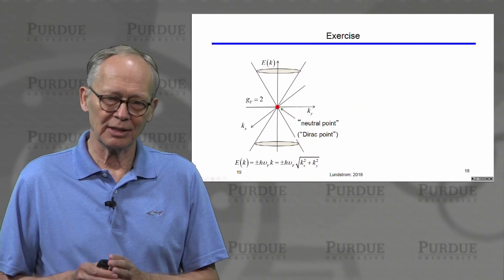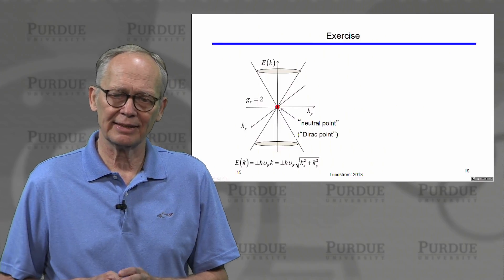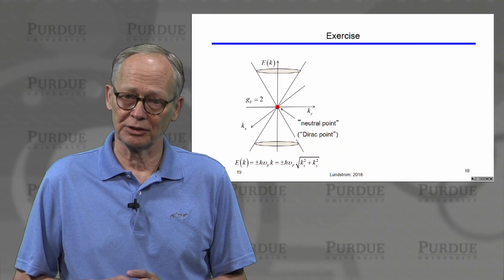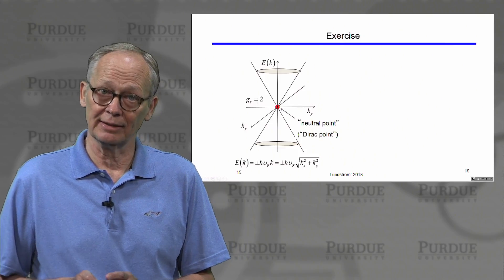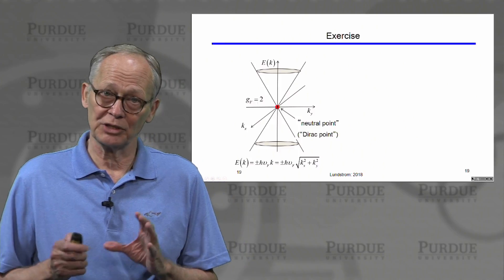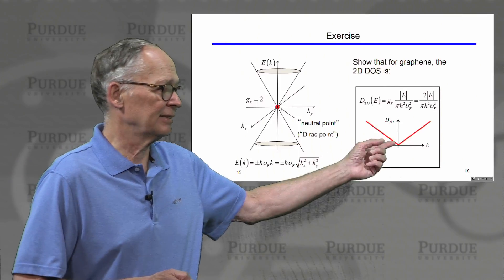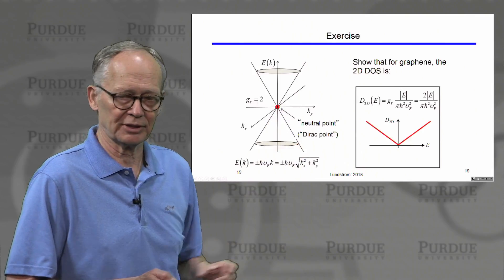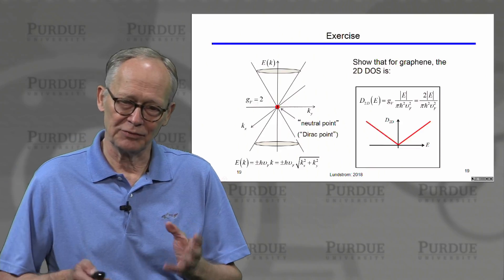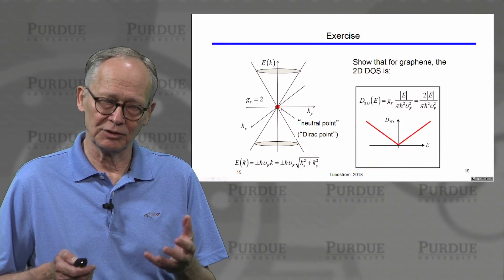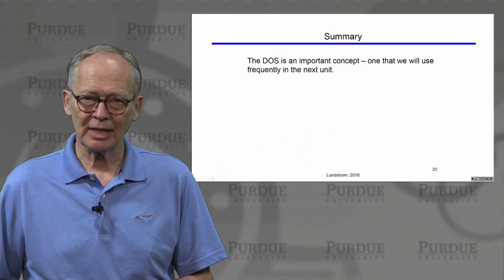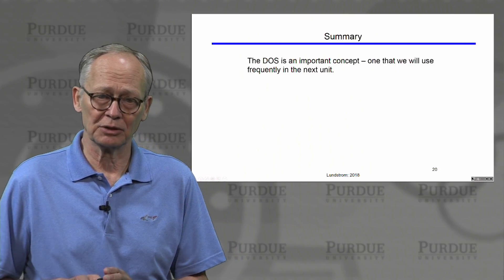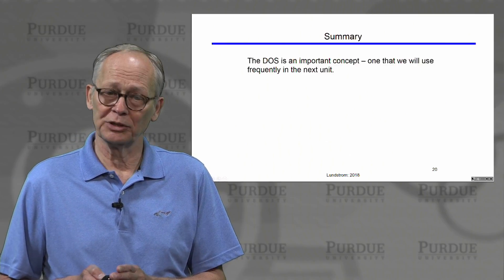As an exercise to test yourself: compute the density of states for graphene. Graphene does not have a parabolic band structure; it is a 2D material with a density of states significantly different from the parabolic 2D result. The answer: the density of states increases linearly with energy above and below E equals zero. If you can derive that, you understand the process of deriving a density of states for any band structure.